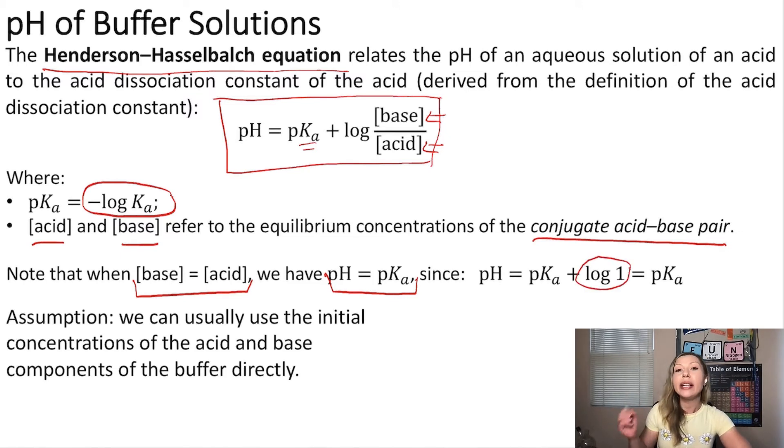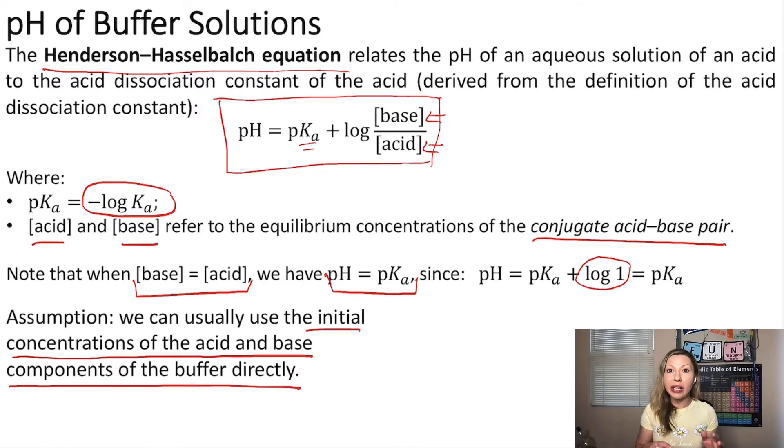We generally can make the assumption that the initial concentrations of the acid and base components of the buffer can be used in this equation. This assumption becomes invalid when you have highly diluted solutions on the order of 10^-5 mol per liter or lower. So be careful with that.